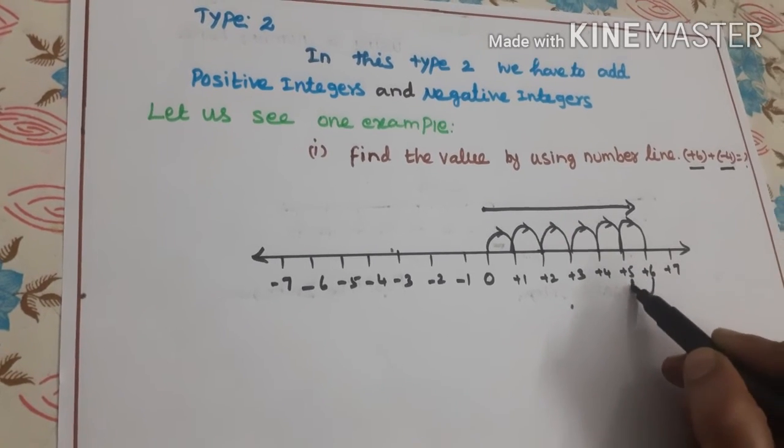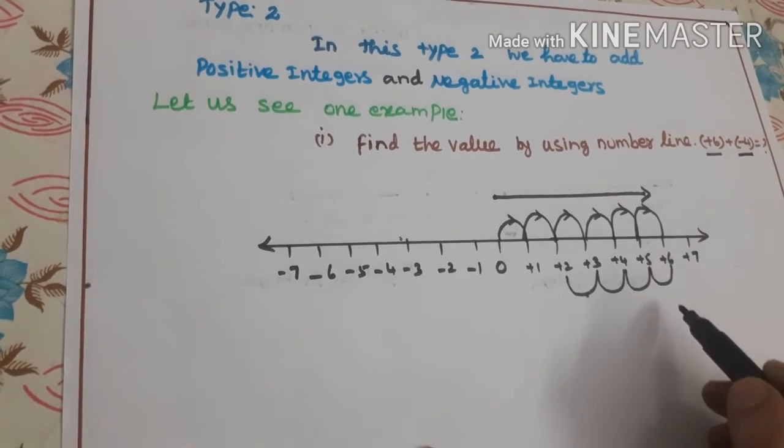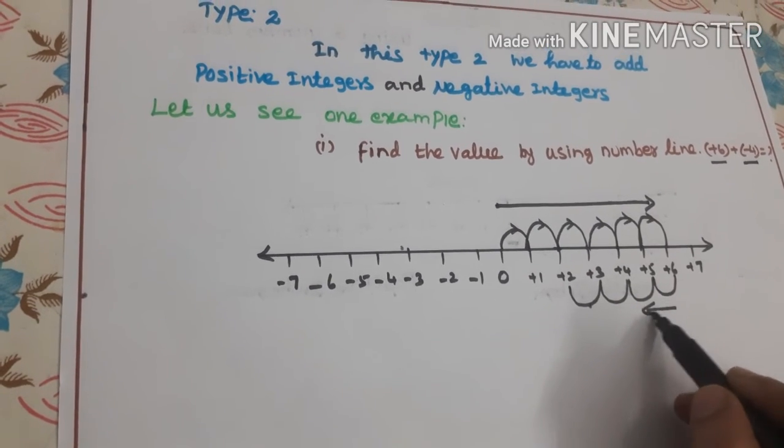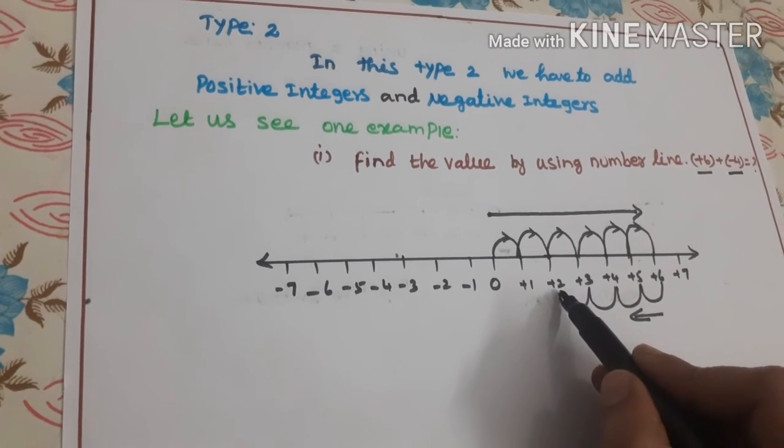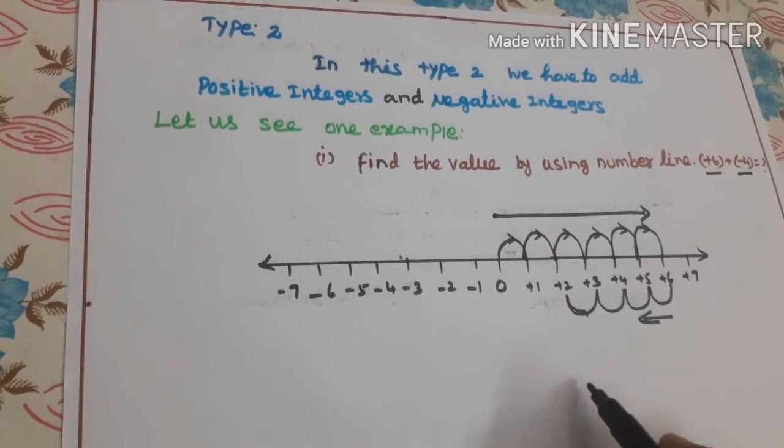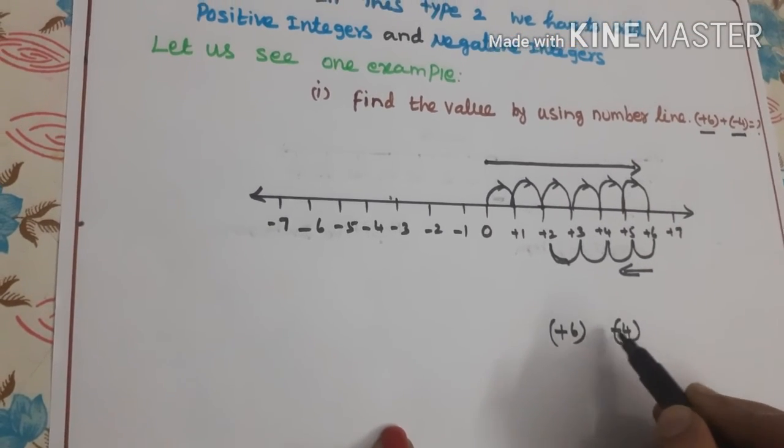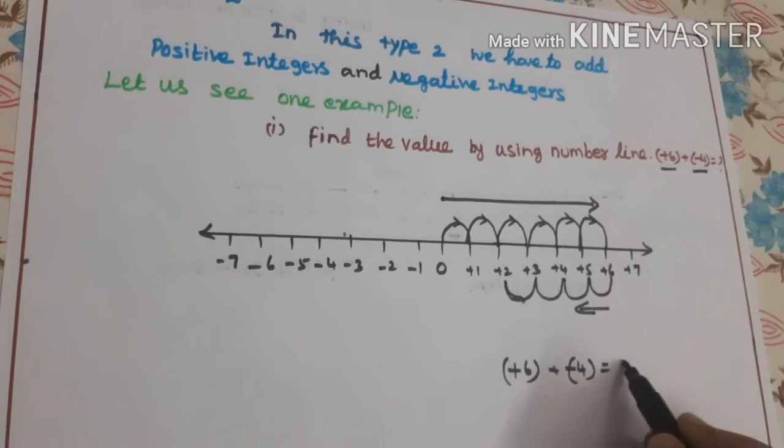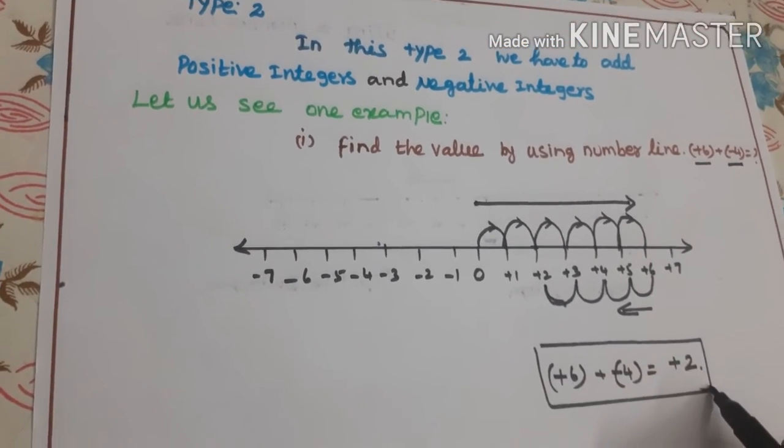1, 2, 3, 4. We will reach positive 2. Hence, the answer is positive 6 and negative 4, we will get positive 2. Therefore, the answer is positive 2.